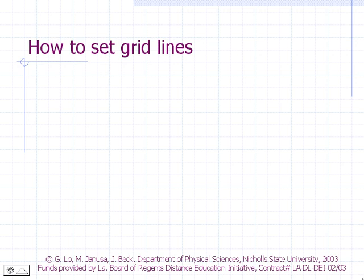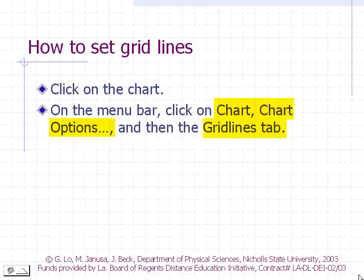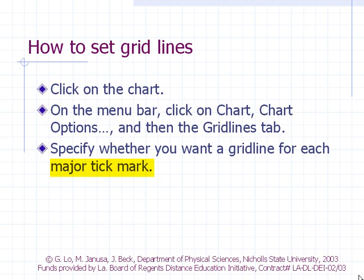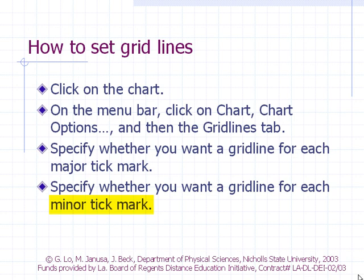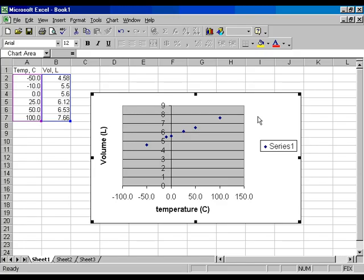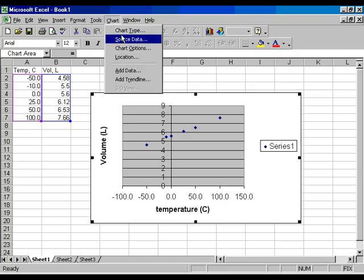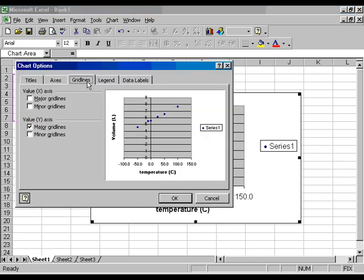How to set the grid lines: Click on the chart. On the menu bar, click Chart, Chart Options, and then the Grid Lines tab. Specify whether you want a grid line for each major tick mark and whether you want a grid line for each minor tick mark. Then click OK.